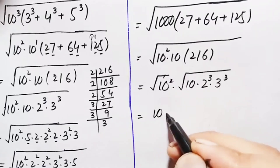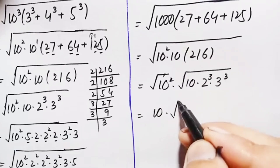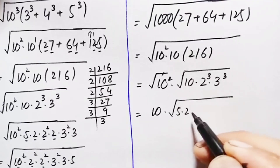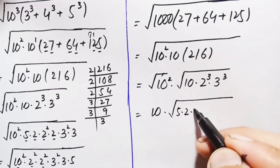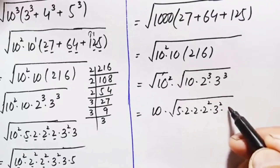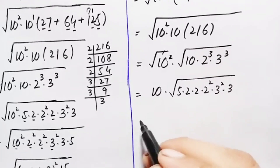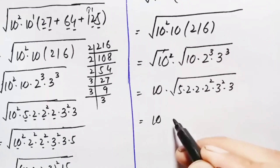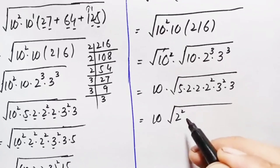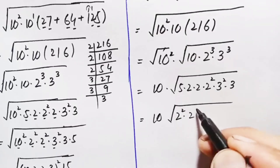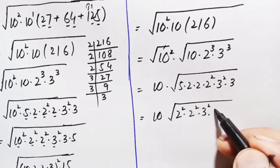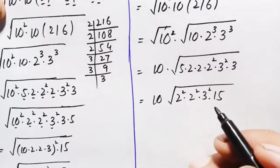The square and square root of 10 squared cancel, leaving 10. We write 10 as 5×2, 2 cubed as 2×2 squared, and 3 cubed as 3 squared times 3. So we have 10 times the square root of (2 squared times 2 squared times 3 squared times 2 times 3 times 5).